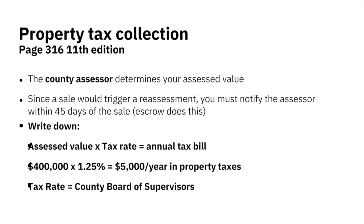True or false: the assessed value is correlated to the market value of a home. False. The assessed value has nothing to do with the market value, because the assessed value can't go up more than 2% a year, while market value is going up 5, 6, 8, 10, 12% a year. Over time, you get a big disparity between the market value up here and the assessed value way down here.